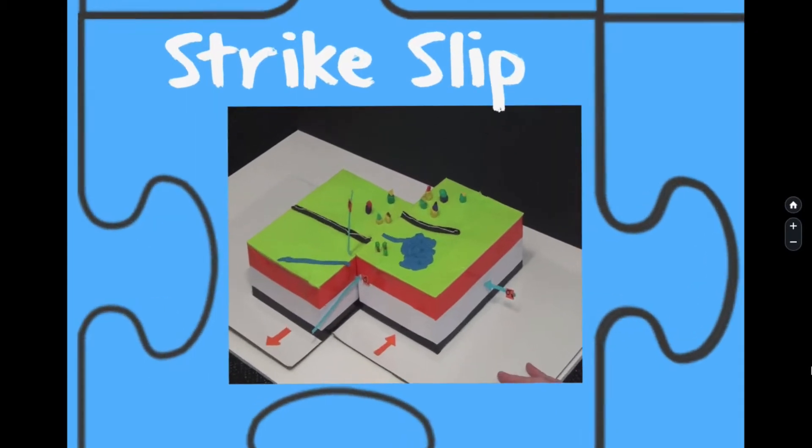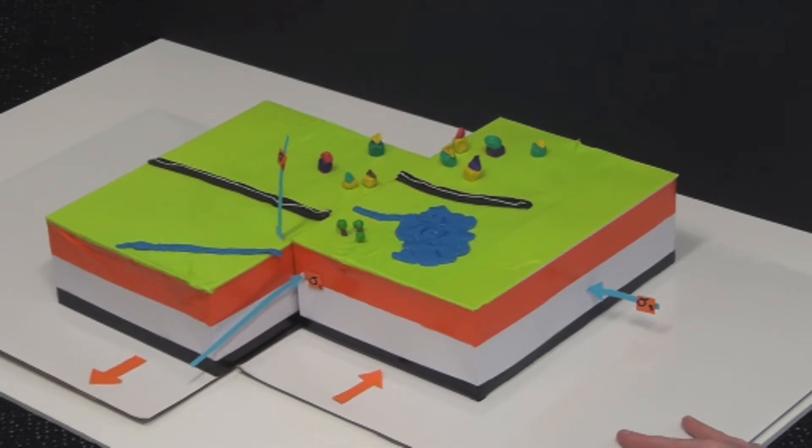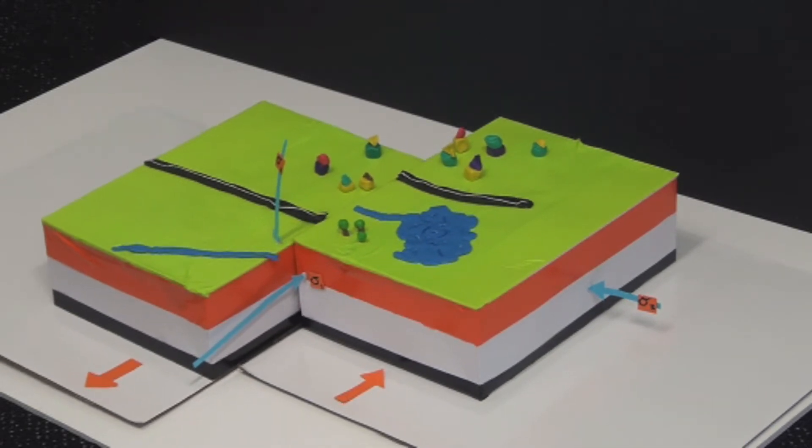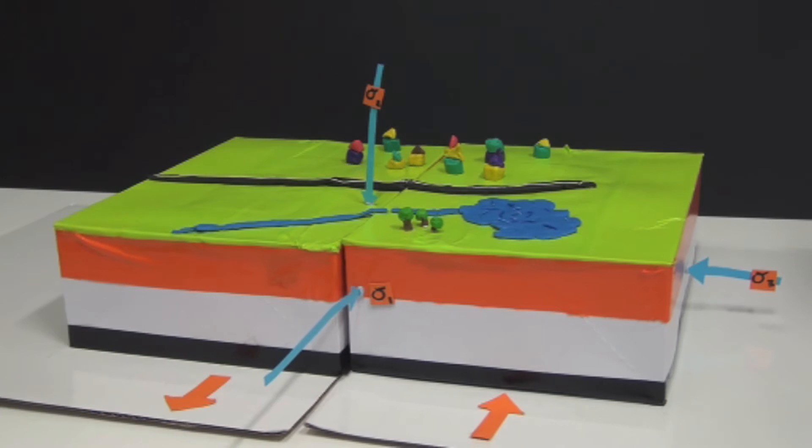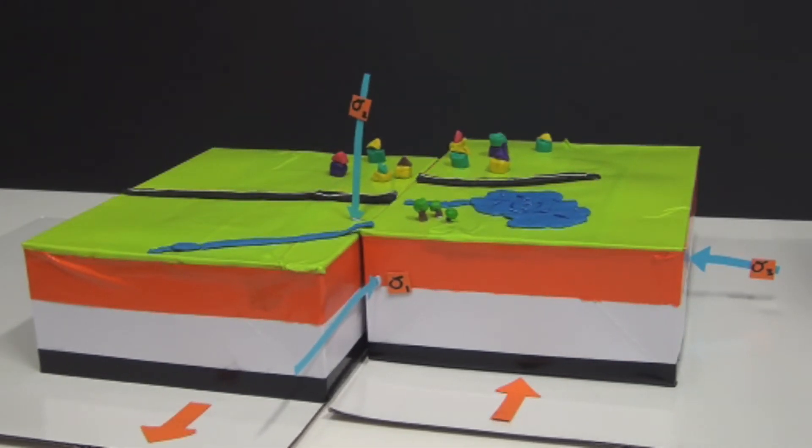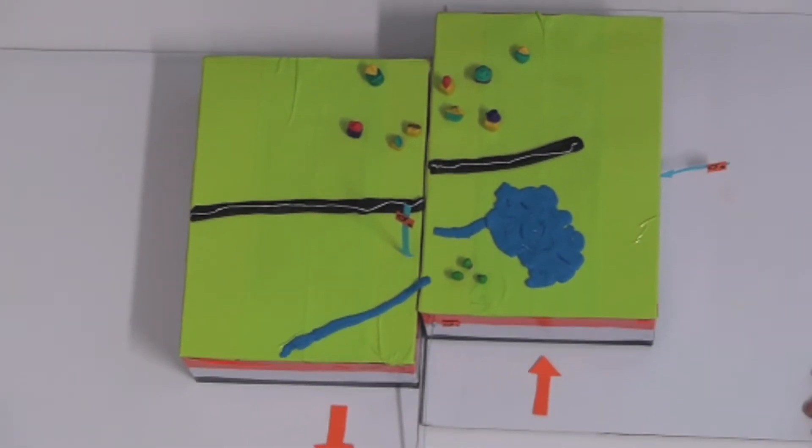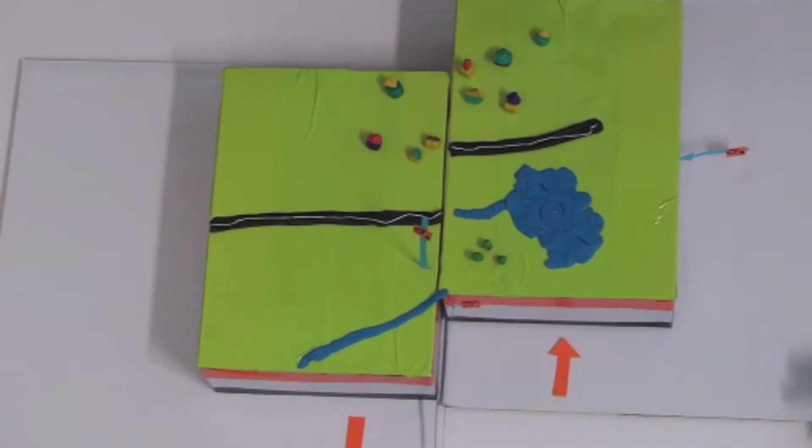In a strike slip fault the fault surface is vertical. The direction of lateral movement can be defined by using the idea that an observer is situated on one side of the fault. If the observer views the opposite side of the fault moving to the left it is defined as a sinistral fault. If the observer views the side of the fault moving to the right it is defined as a dextral fault.